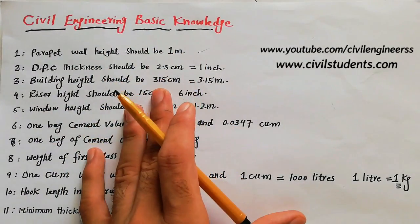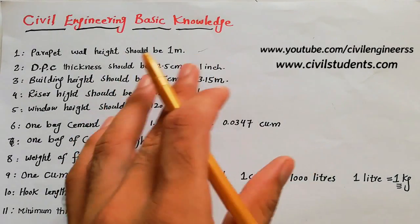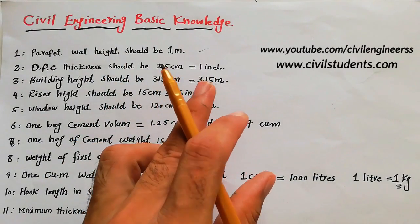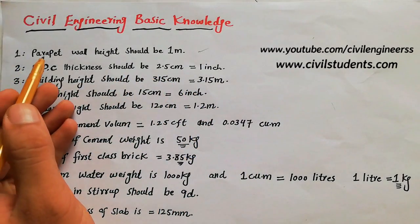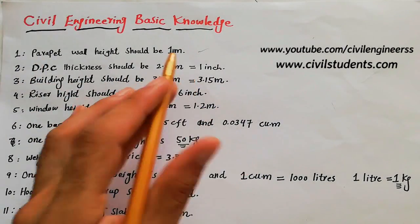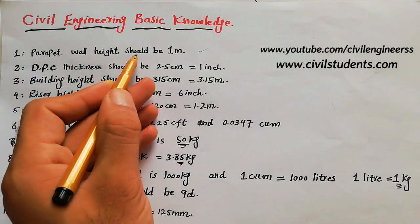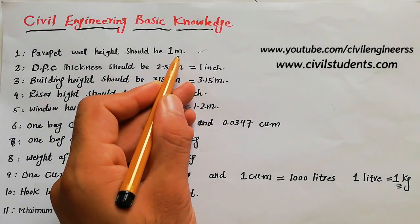Let's get started but don't forget to like this video and share this video with your friends. So the first one: in building work, parapet wall height should be 1 meter. It should be not less than 1 meter.